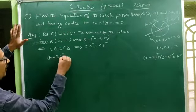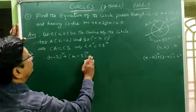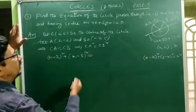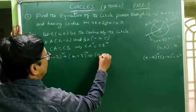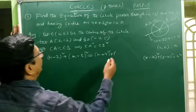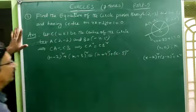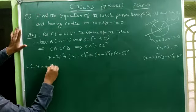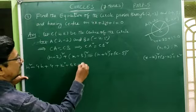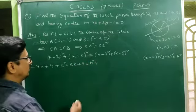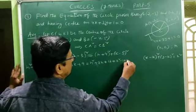CA² = CB². Now we write CB². Coordinates of C are (h, k) and coordinates of B are (-4, 5). CB² = (h + 4)² + (k - 5)². Now we simplify: expanding CA² gives h² - 4h + 4 + k² + 6k + 9. Expanding CB² gives h² + 8h + 16 + k² - 10k + 25.